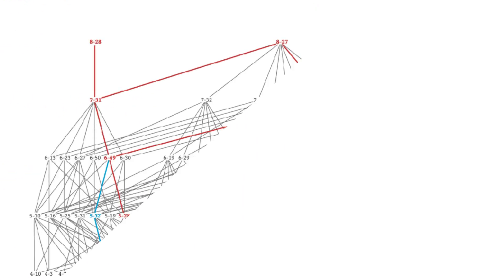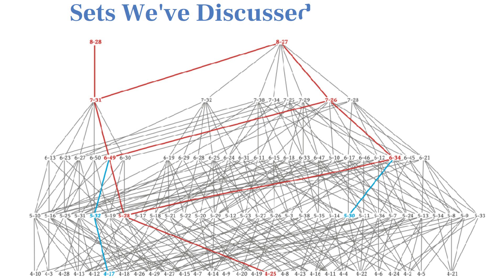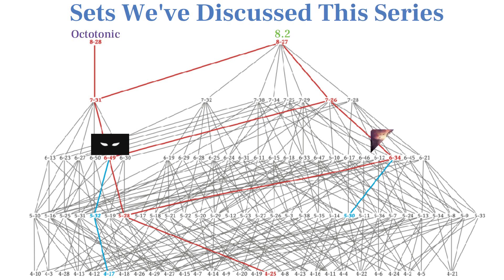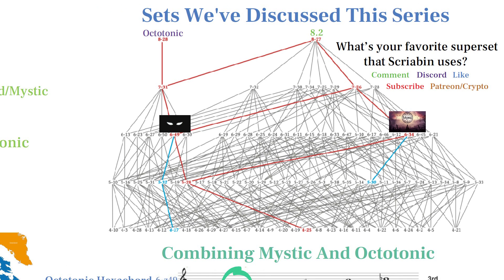Lastly, here is the Haas diagram showing all the most important integral sets we've discussed in this series in red, and the less prominent sets we've discussed in blue. What's your favorite superset that Scriabin uses? Let me know in the comments, join the Discord, like, subscribe, and support me on Patreon.